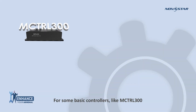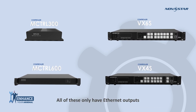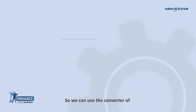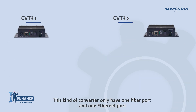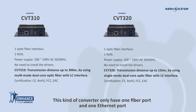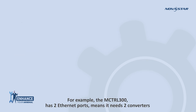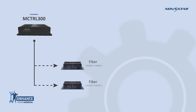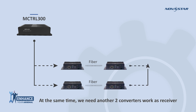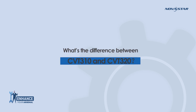For some basic controllers like MCtrl 300, MCtrl 600, VX4S, and VX6S — all of these only have Ethernet output ports, so we can use the converter CVT310 or CVT320. This kind of converter only has one fiber port and one Ethernet port. One fiber transmits one gigabit, meaning one fiber will carry the data of one Ethernet cable. For example, the MCtrl 300 has two Ethernet ports, which means it needs two converters.